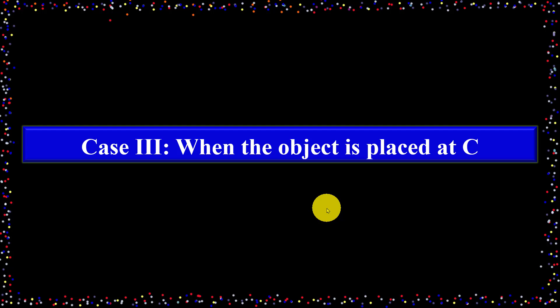Hello everyone. In this video, I am going to explain Case 3 — when the object is placed at the center of curvature, or twice the focal length, also called when the object is placed at C. This is one of the important cases from an exam point of view because many times in board exams, there are repeated questions based on Case 3.